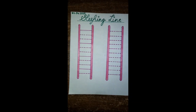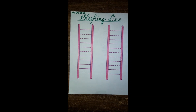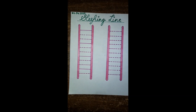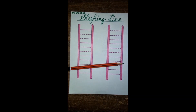Children, today we are going to learn sleeping line. Before we start with sleeping line, let us first differentiate between standing and sleeping line. Quickly stand up at your place. When you stand, you form a standing line. Now lie down. When you lie down or sleep, you form a sleeping line.